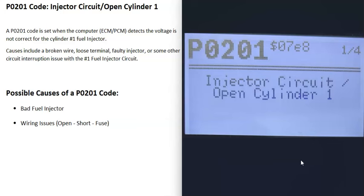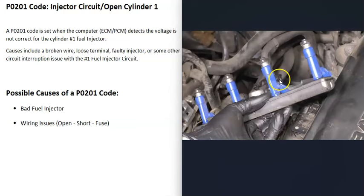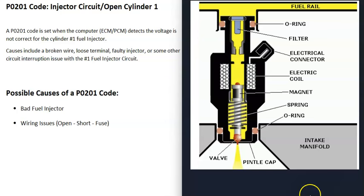The main possible causes of a P0201 code are either the fuel injector on cylinder number one has gone bad, or there's some kind of wiring issue. There are a few different ways to troubleshoot this — one way is to go test the fuel injector on cylinder number one and confirm that it's good, and if it is, then check the wiring.